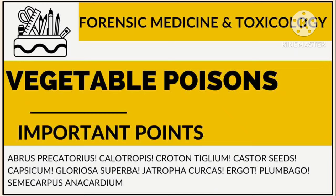Dear friends, in this video we will see some important points of vegetable poisons. They are organic irritant poisons and include Abrus precatorius, Calotropis, Croton tiglium, Castor seeds, Capsicum, Gloriosa superba, Ergot, Plumbago, Semicarpus anacardium, etc. So let's start the video.